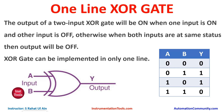When both inputs are at the same status, the output will be off. When both inputs are zero, output is zero. When both inputs are one, the output is zero. But when the inputs are different — one is false and another is true, or one is true and another is false — the output is true.